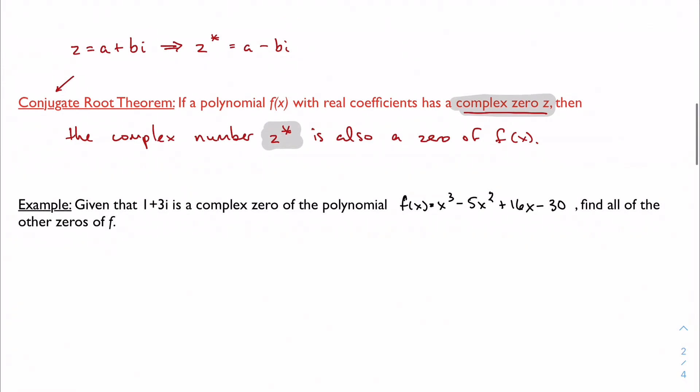You'll see in a second, but if like 2i is a root, then so is negative 2i. If 1 plus 3i is a root, so is 1 minus 3i.